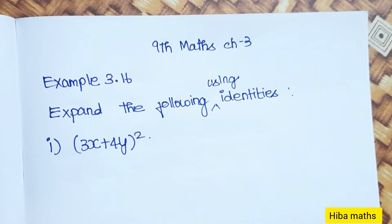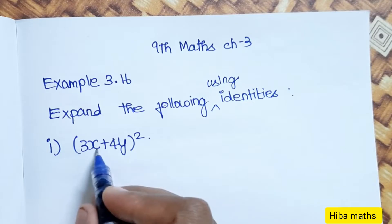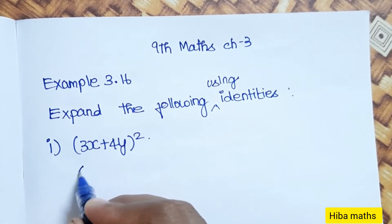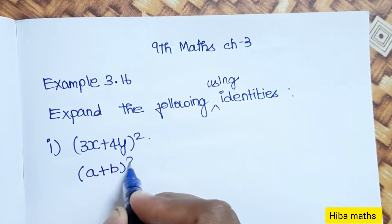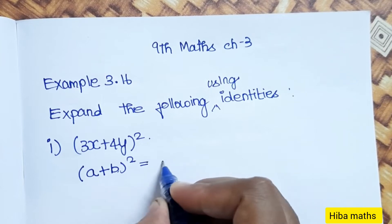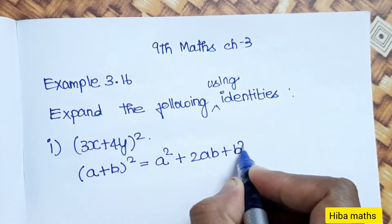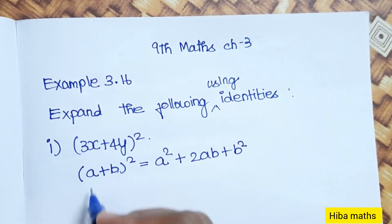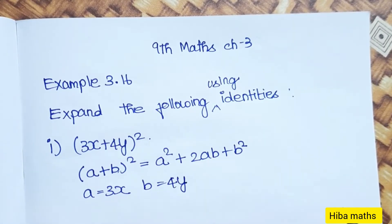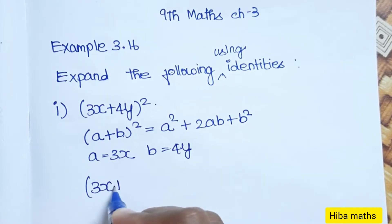The first question is (3x + 4y) whole square. The identity we use is the (a + b) whole square formula: a squared plus 2ab plus b squared. Now compare a to 3x and b to 4y, then substitute into the formula.